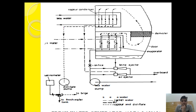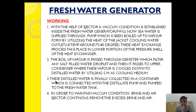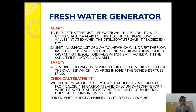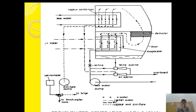The water passing through the distillate pump is sent to the fresh water tank after being monitored through a salinometer. What are the alarms provided in the fresh water generator? A high salinity alarm is provided which will be initiated when the distillate water salinity exceeds 4 ppm. In the shipping industry we normally keep the limit much below that — around 1 ppm. The salinity alarm consists of a three-way valve which will divert the flow back to the pressure cell if salinity increases, operated by a solenoid attached with the salinity indicator and alarm.